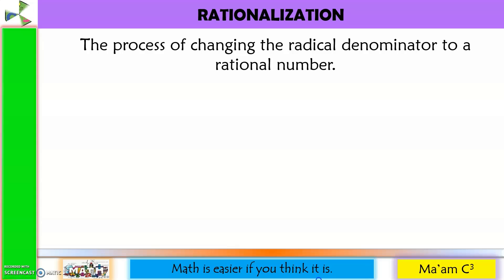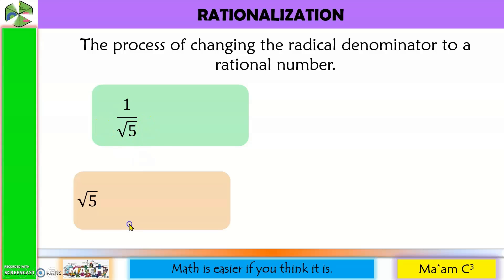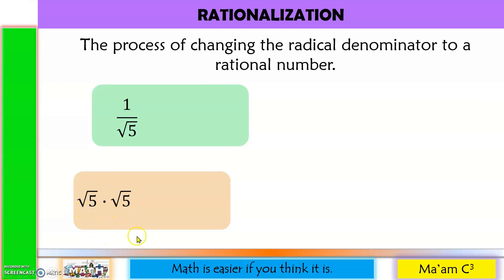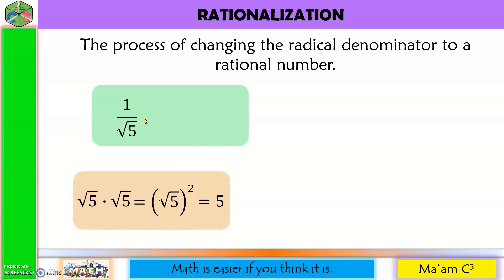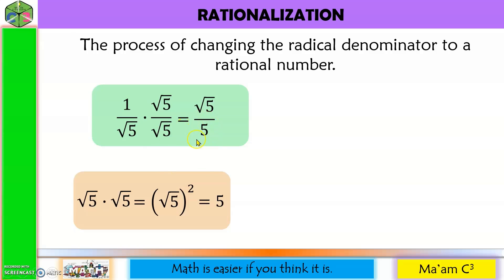Let us say we have 1 over the square root of 5. To what expression are we going to multiply the square root of 5 to make it a rational number? We multiply it by itself — the square root of 5 times the square root of 5 is the square root of 5 squared. By the property of radicals, since the index is 2, we can cancel the index and the exponent 2, giving us 5. So we multiply numerator and denominator by the square root of 5: the result is the square root of 5 over 5. No more radical in the denominator.